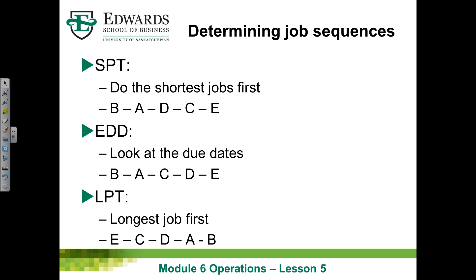For Longest Processing Time (LPT), you do the longest job first. The easy way to get this sequence is to simply reverse the SPT order, since LPT is the exact opposite. So under LPT the sequence would be E, C, D, A, B — the exact reverse of the SPT sequence B, A, D, C, E.